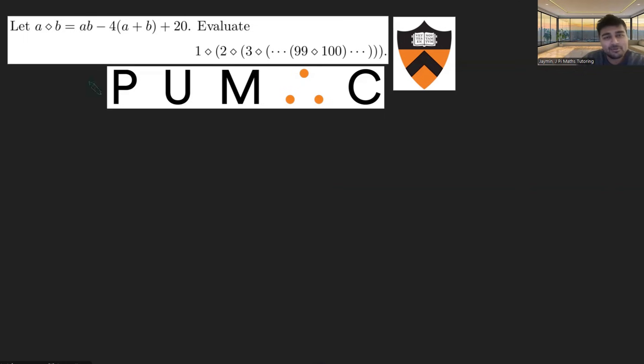This is a really interesting problem. We've got this weird operation of doing A diamond B and we want to work out this very big, almost like a product here.